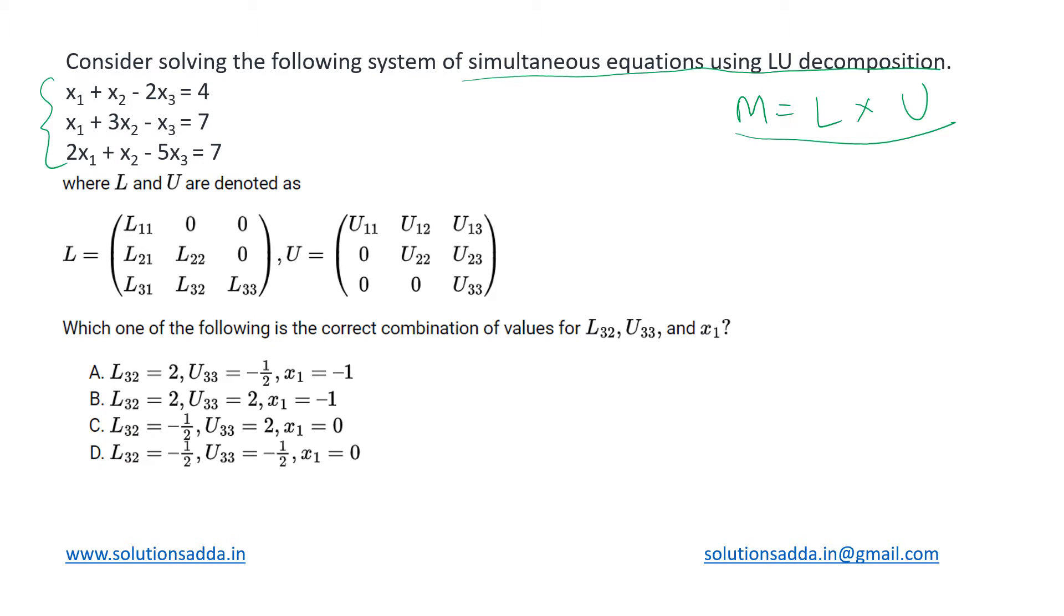So the definitions for L and U have been given, these are the indexes starting from L11 and so on, and U11 this way. What we have to do is, given this system of simultaneous equations, we will be generating a matrix and then performing the LU decomposition on that matrix, and then we will be identifying which values the given positions occupy.